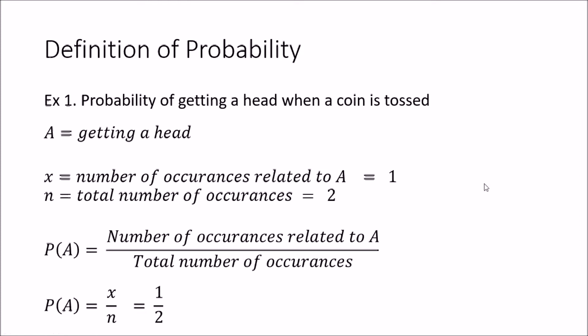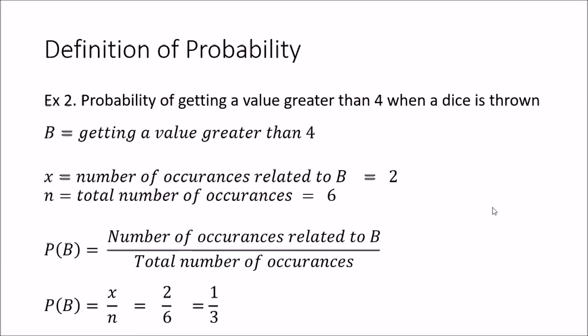In the second example, we are going to throw a dice. A dice has six sides with numbers from 1 to 6, and we are going to look at the event of getting a value greater than 4. The values greater than 4 are 5 and 6, so the number of occurrences related to event B is 2, and the total number of occurrences is 6. Therefore P(B) = 2 over 6, which equals 1 over 3.